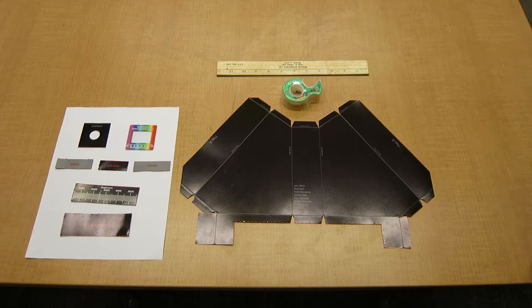So here are all the parts for the spectroscope you're going to be making. They come in a sheet, and you tear them all out, and this is what you're left with.